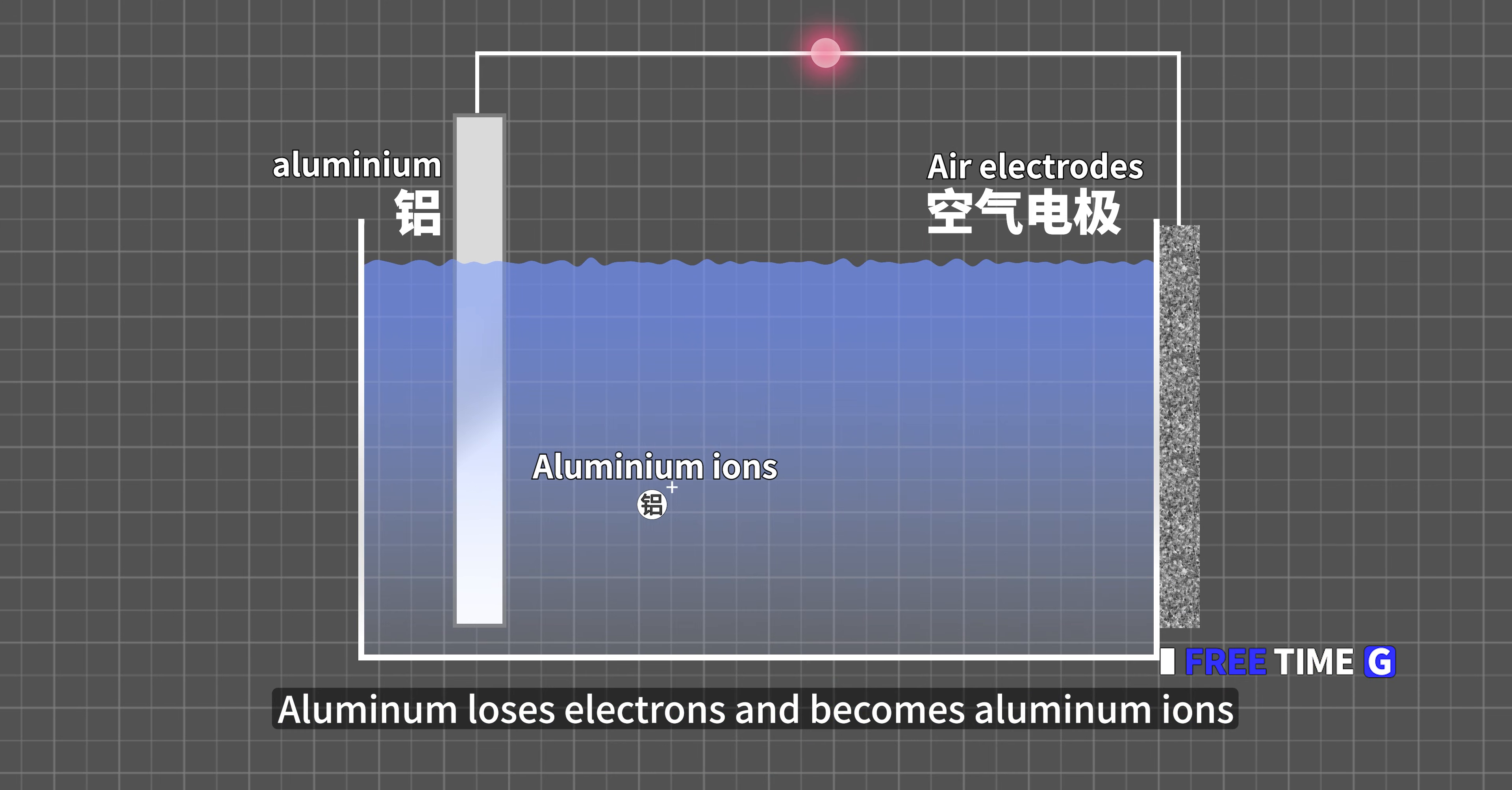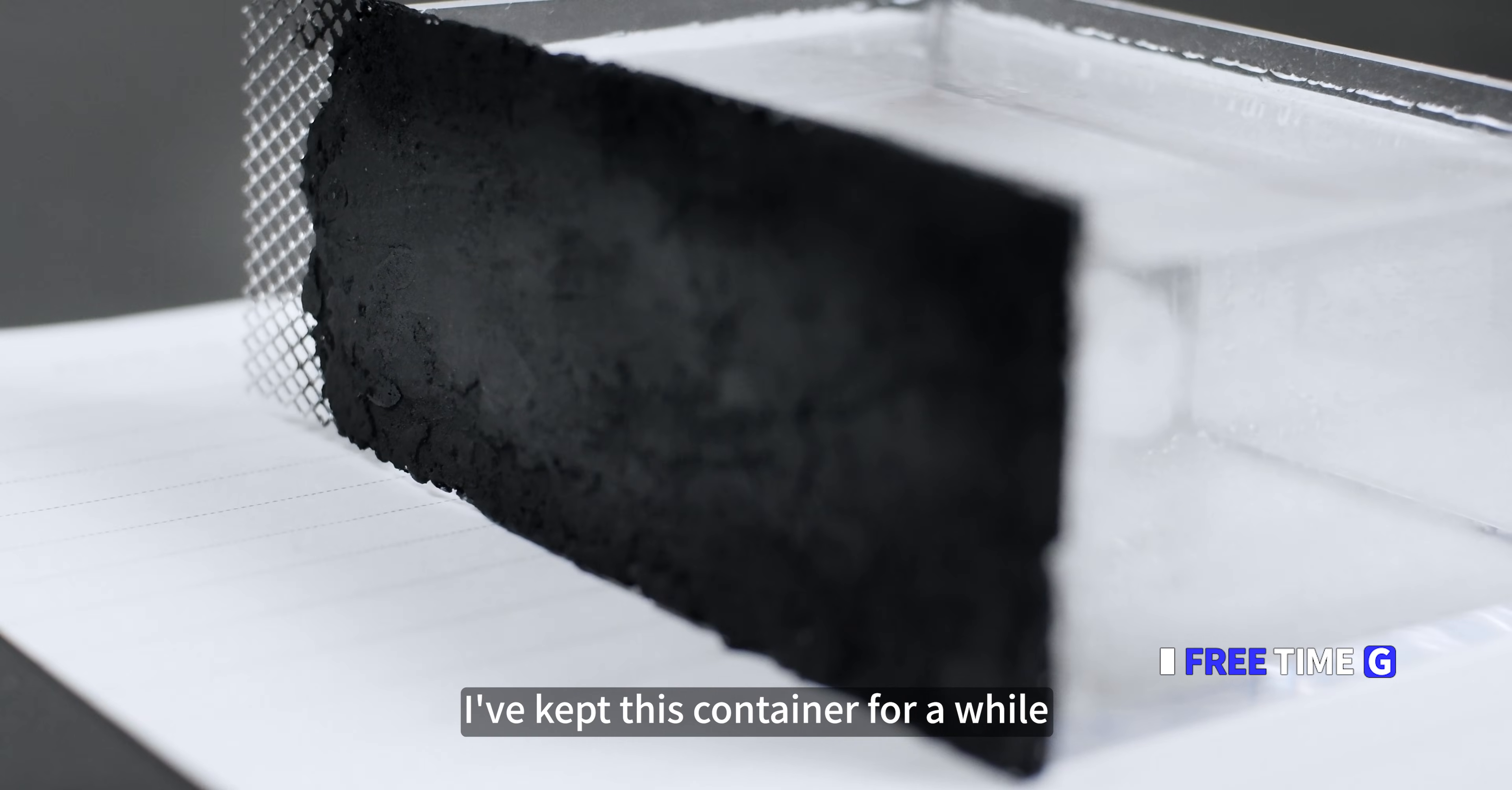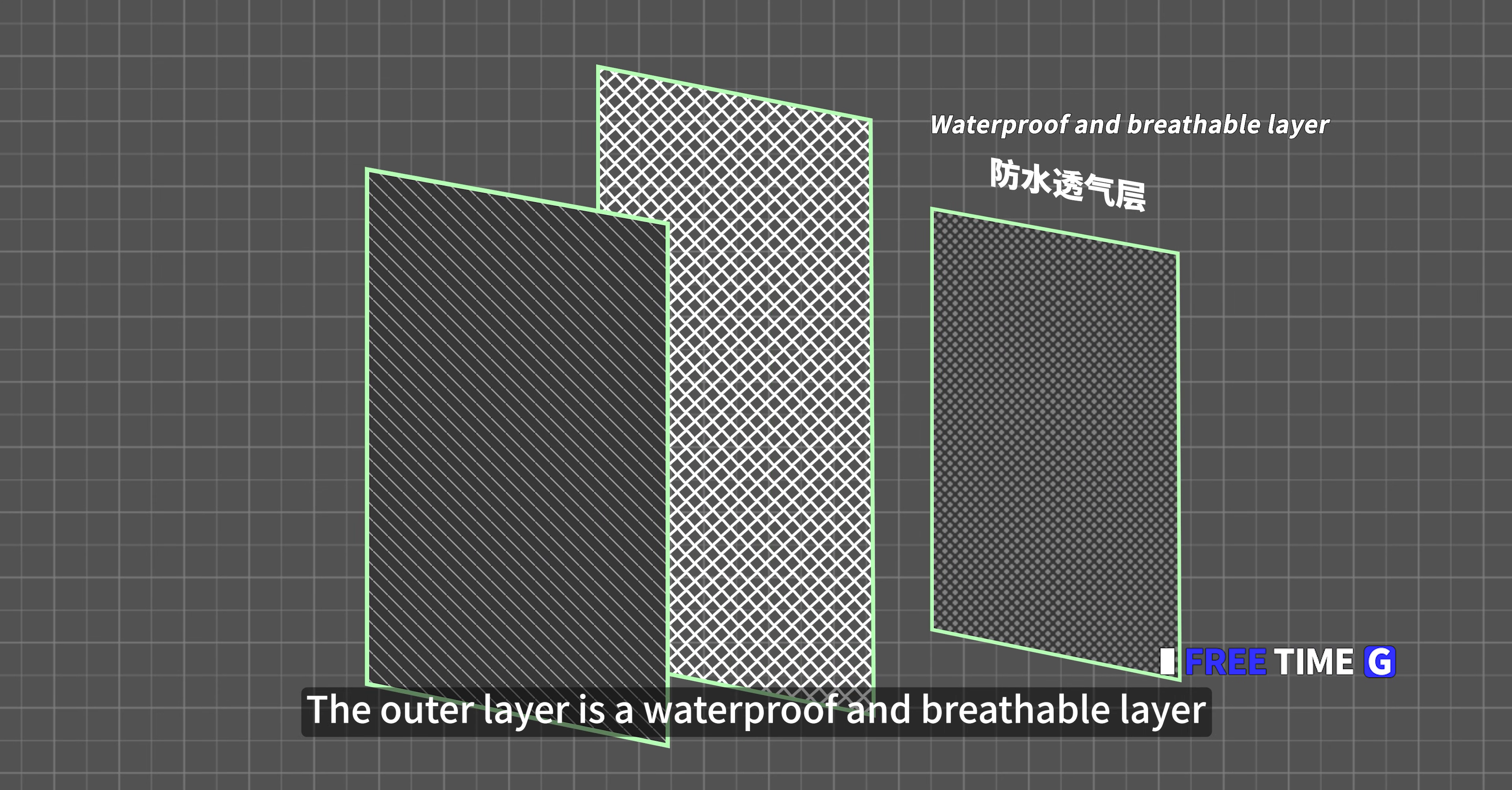Aluminum uses electrons and becomes aluminum ions. The oxygen gets electrons and reacts with water to form hydroxide, then react with aluminum ions. Aluminum hydroxide is produced, then with sodium hydroxide, the reaction produces sodium aluminate. This is the whole closed loop. Some people may say that carbon gas can enter, will the liquid not seep out? This issue is very important. I've kept this container for a while, no leakage. Because this carbon pole has the characteristics of hydrophobic with the hydrophilic. This is the focus of this issue. How to achieve acceptable efficiency? Low-cost air electrode.